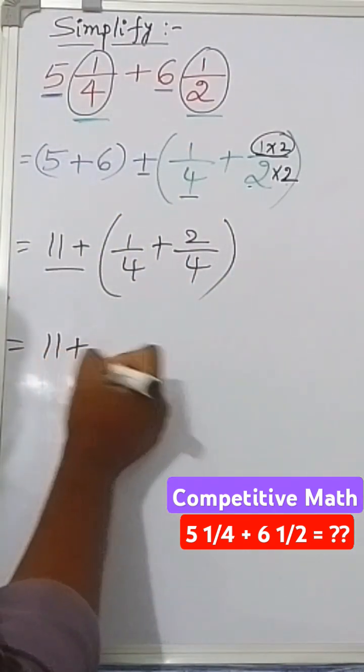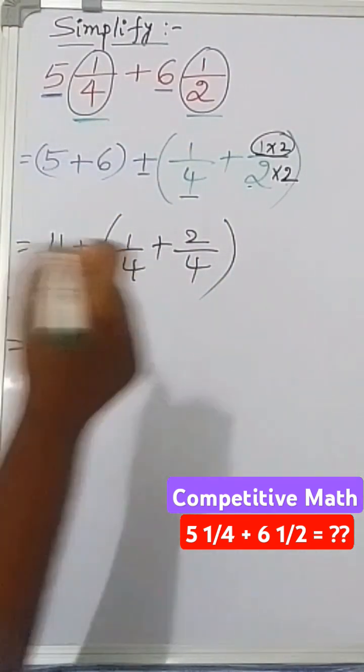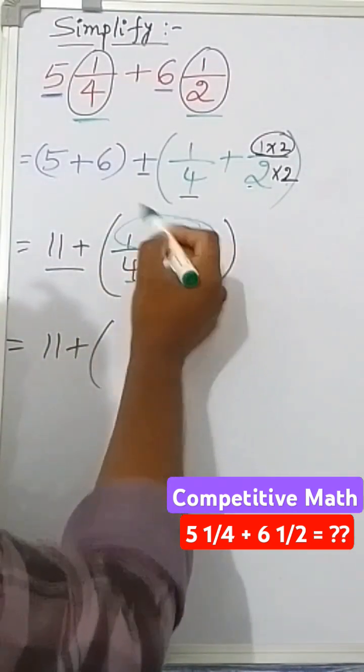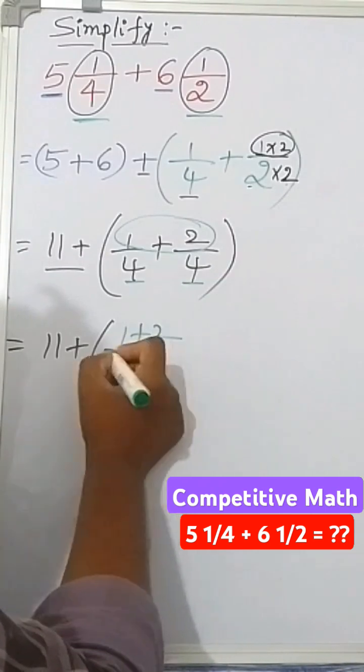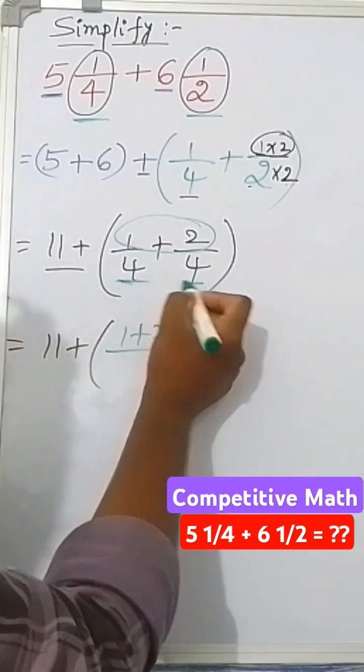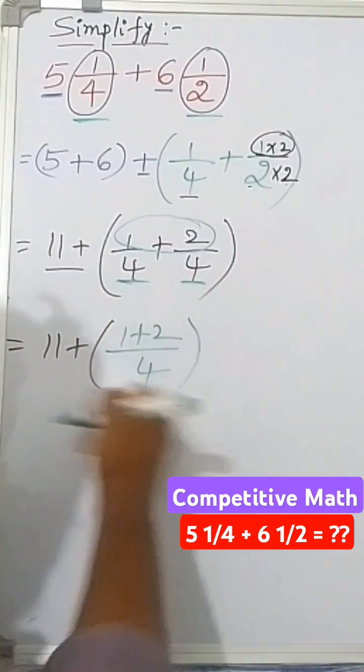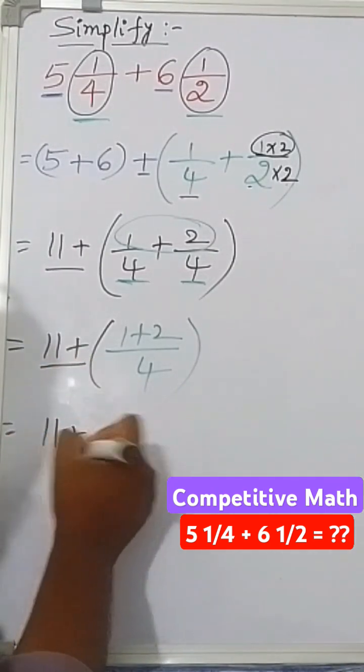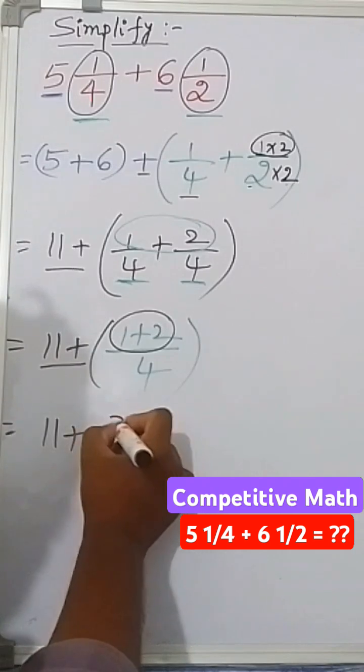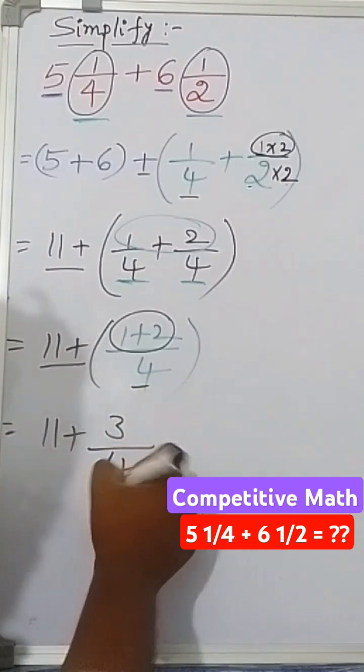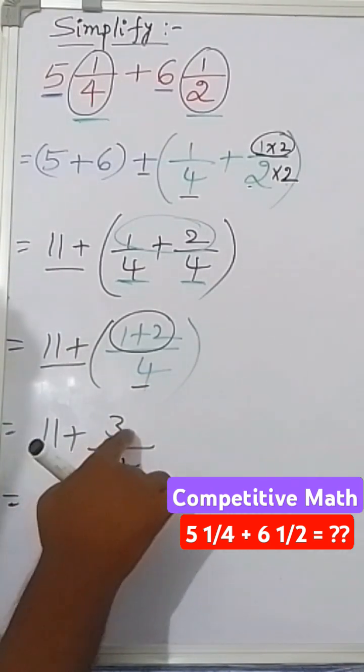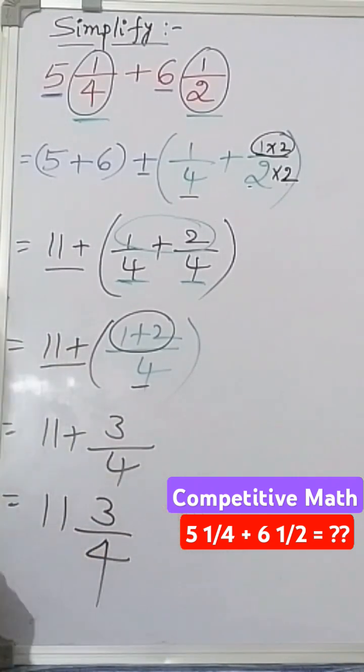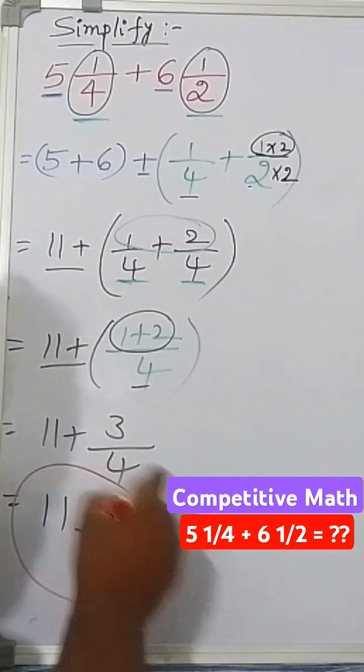Next, we have 11 plus these fractions. The denominators are the same, so we can add the numerators: 1 plus 2 over the common denominator 4. So we have 11 plus, 1 plus 2 equals 3, over 4. Therefore, 11 plus 3/4 can be written as 11 3/4. This is the answer.